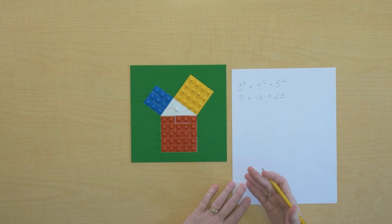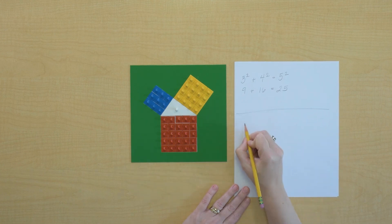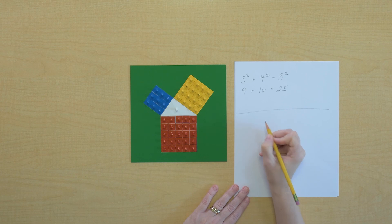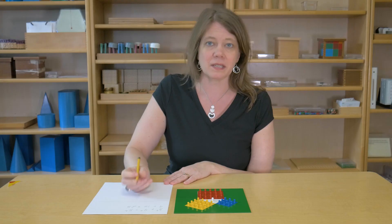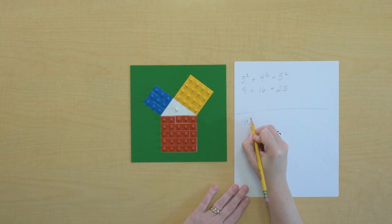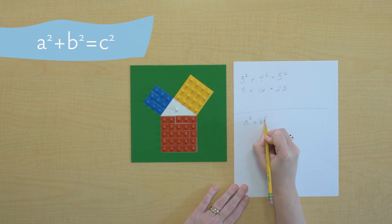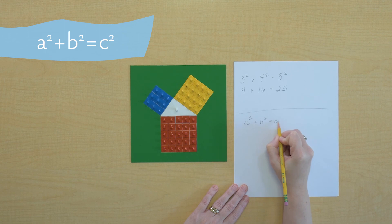At a certain point with the children, then you can bring them back and show them or help them recognize the algebraic formula that it does indeed work for every right triangle. And therefore, we can put some variables in it so that we can have a formula of a squared plus b squared equals c squared.